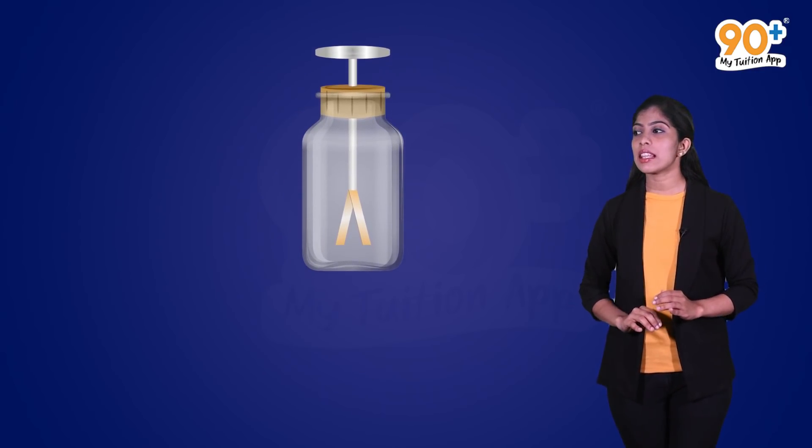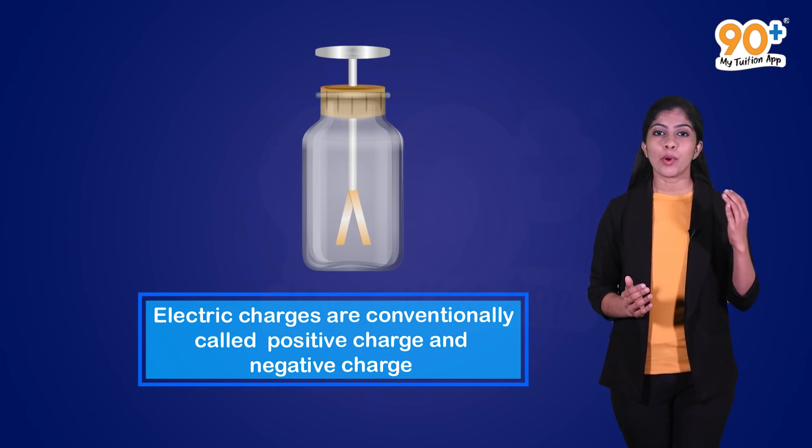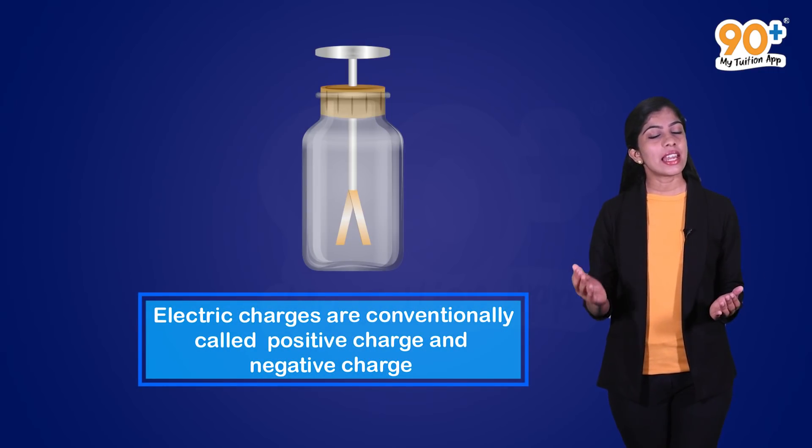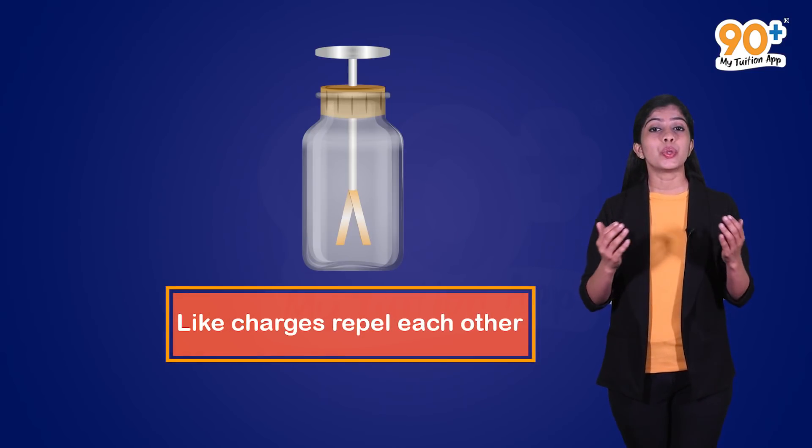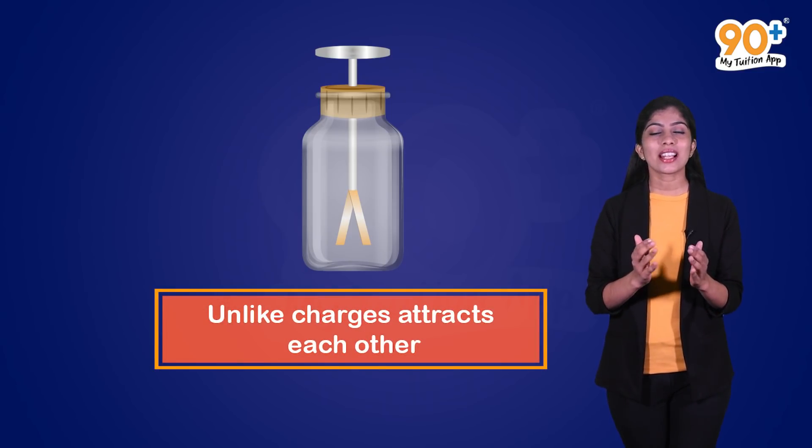On contact, the opposite charges on the gold leaves and silk cloth cancel each other. Thus, we can say that electric charges are conventionally called positive charge and negative charge. And also, like charges repel each other and unlike charges attract each other.